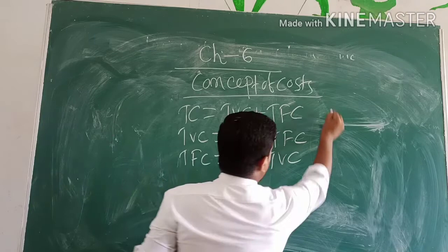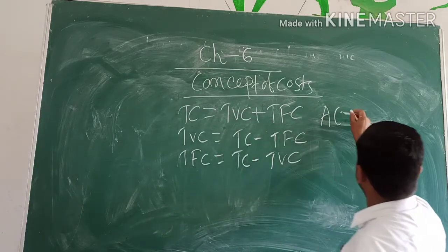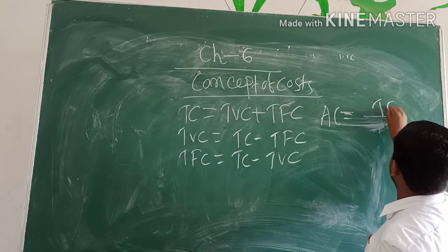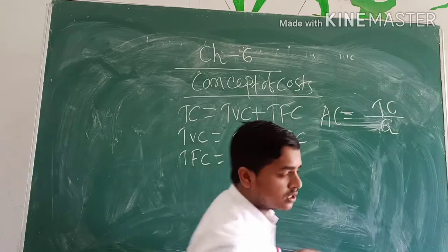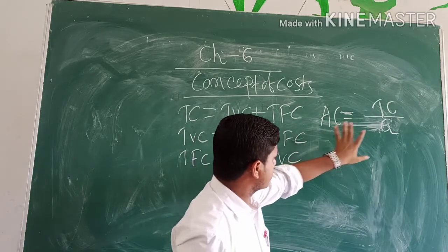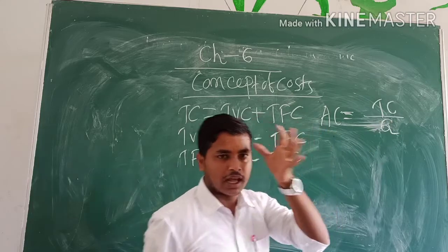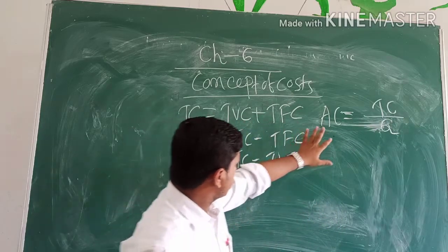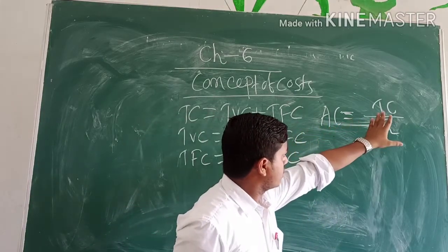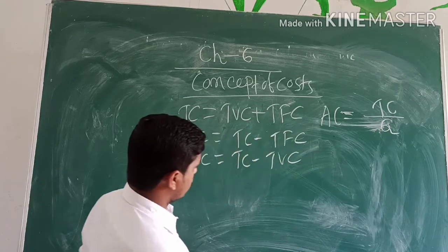Again, AC equals TC by Q. AC is average cost equals total cost divided by output produced.